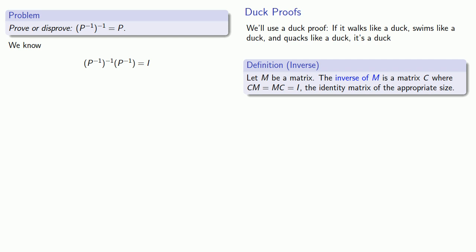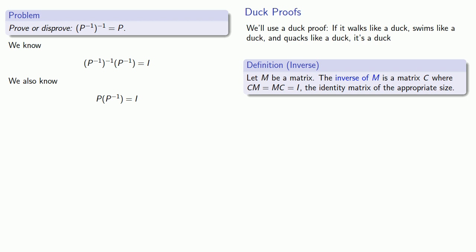That's a very useful property. On the other hand, we know that P times P inverse will also be the identity matrix. Now let's compare our two statements: P has the property that multiplying it on the right by P inverse gives the identity. The inverse of P inverse has the same property — multiplying it on the right by P inverse also gives the identity. So we have two matrices that walk, swim, and quack the same way, and we can conclude that P equals the inverse of P inverse.